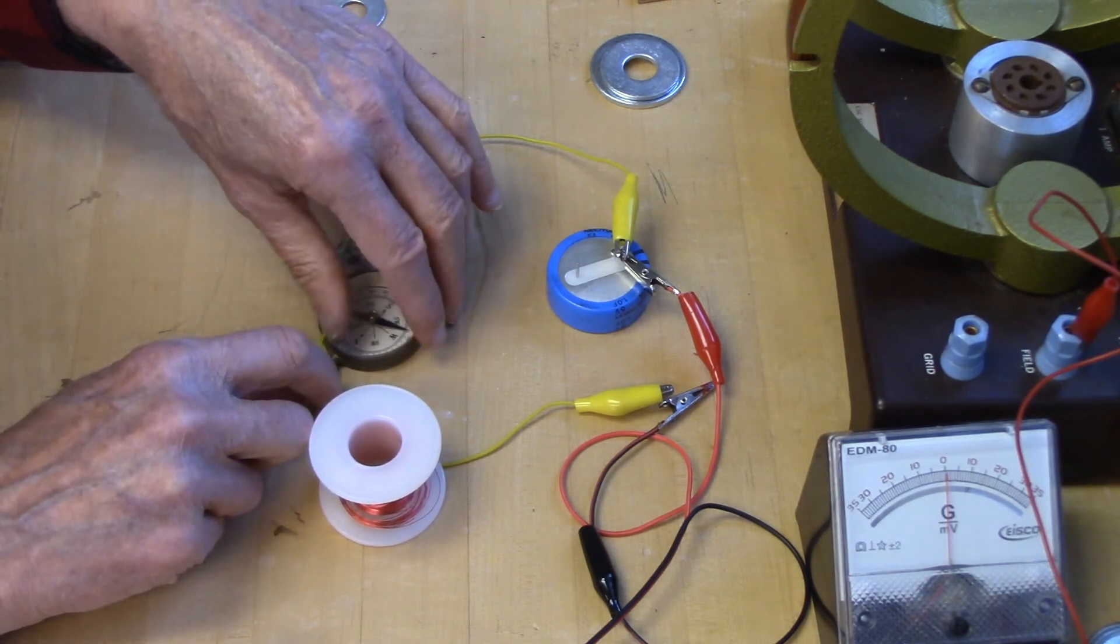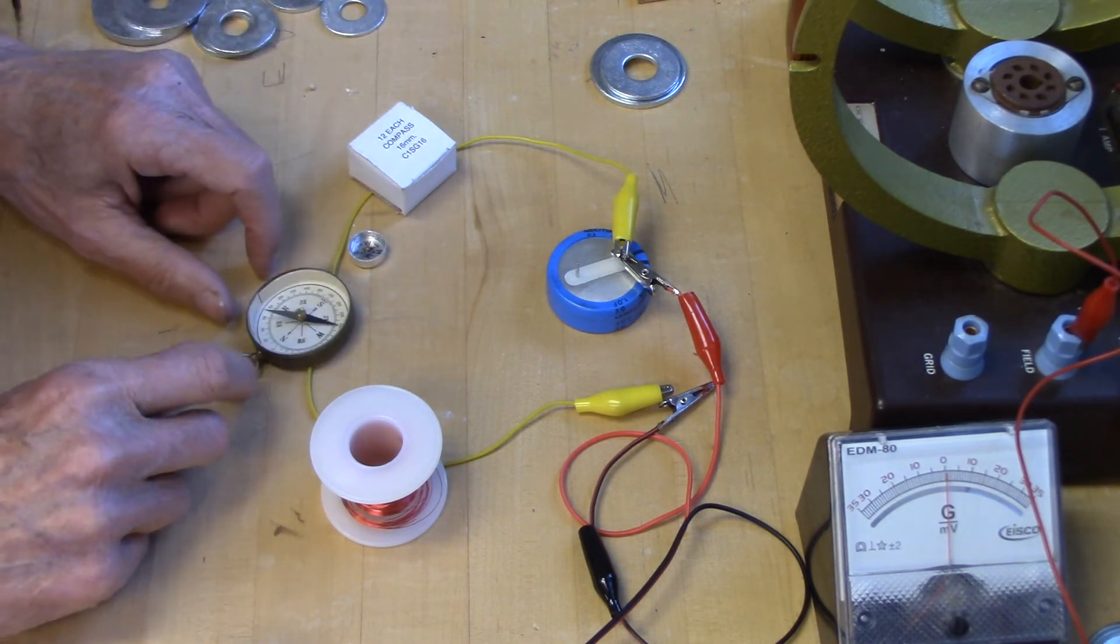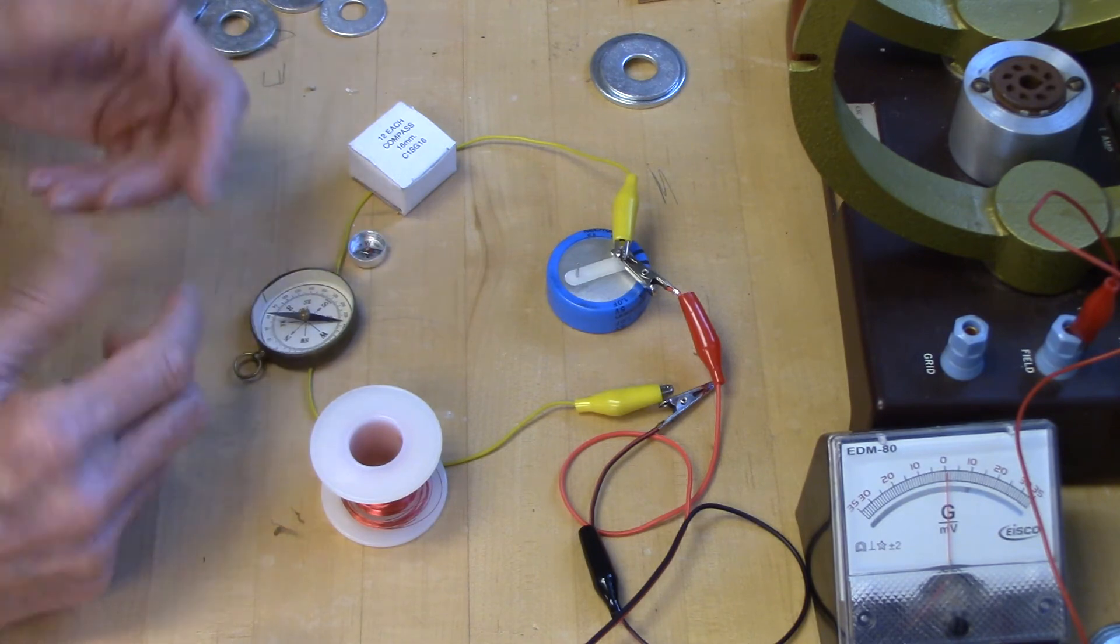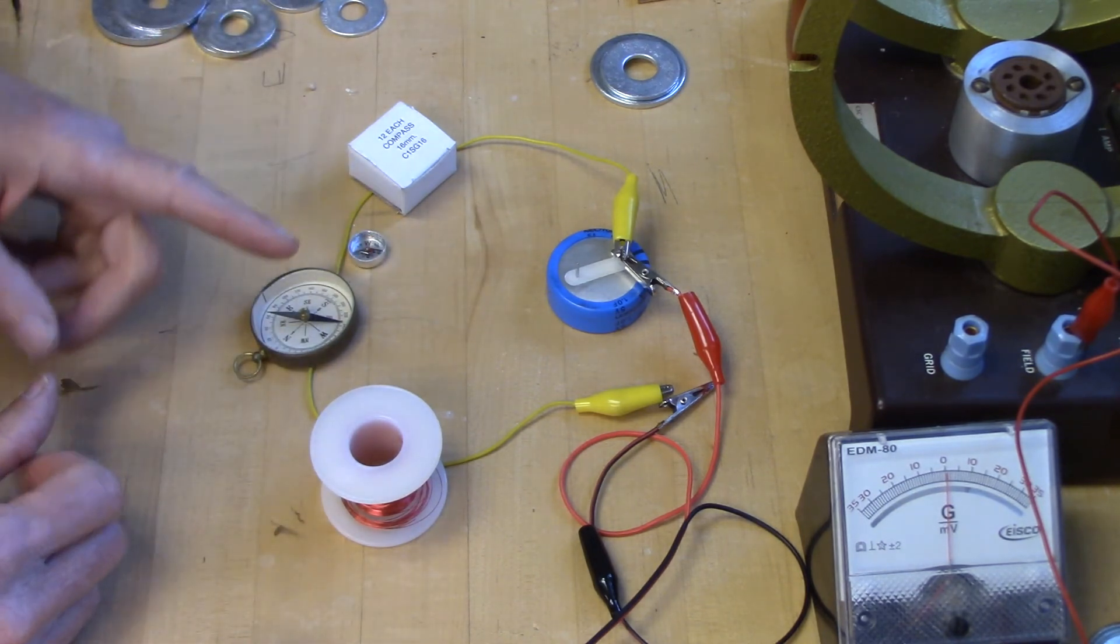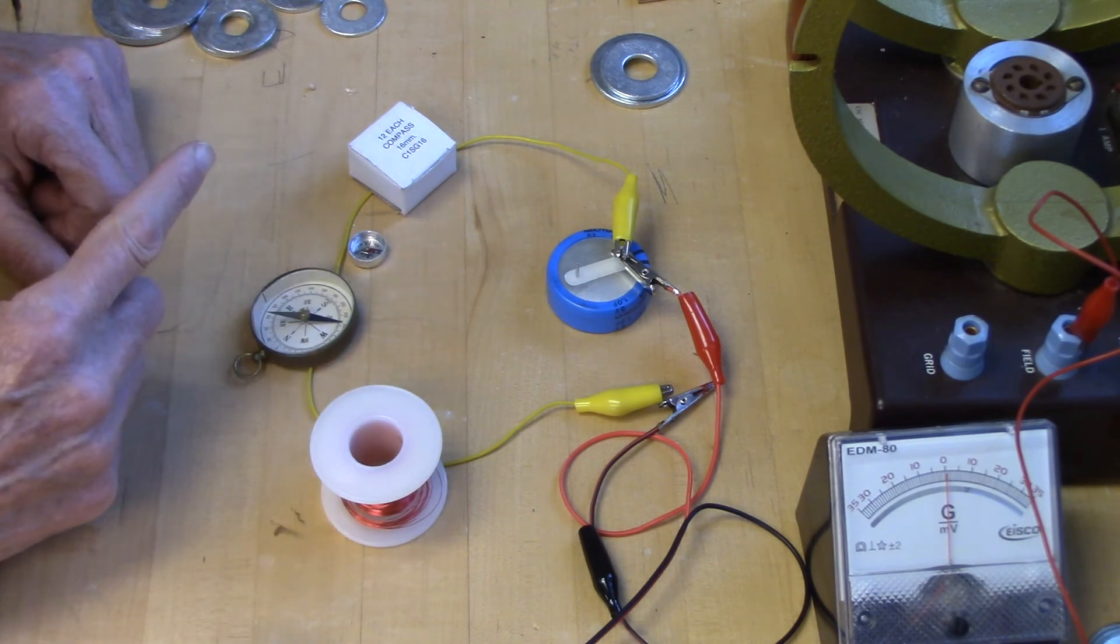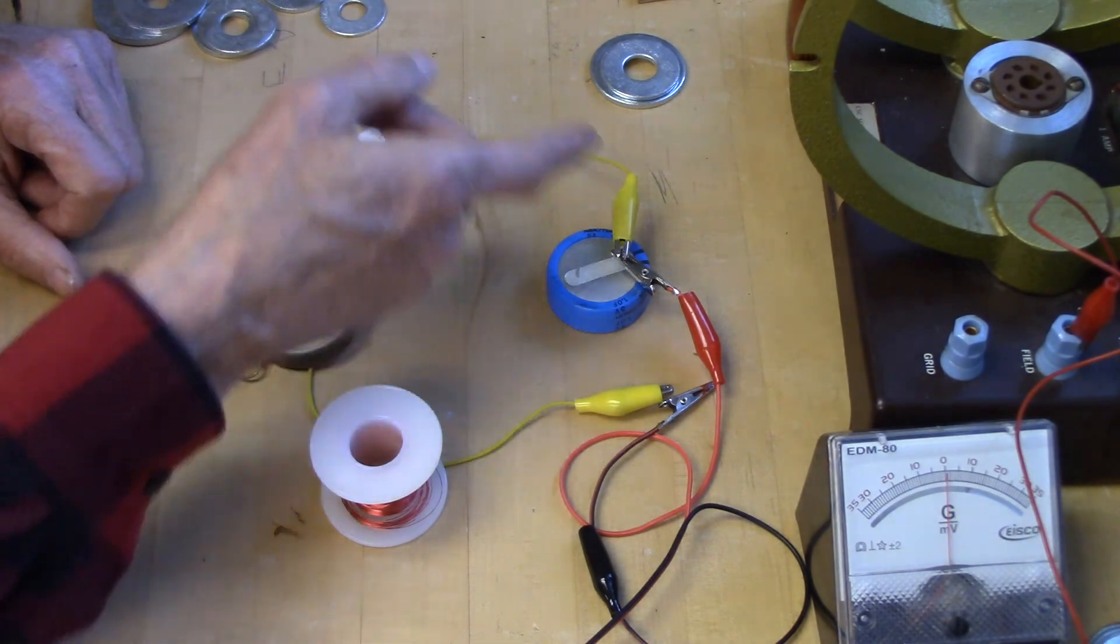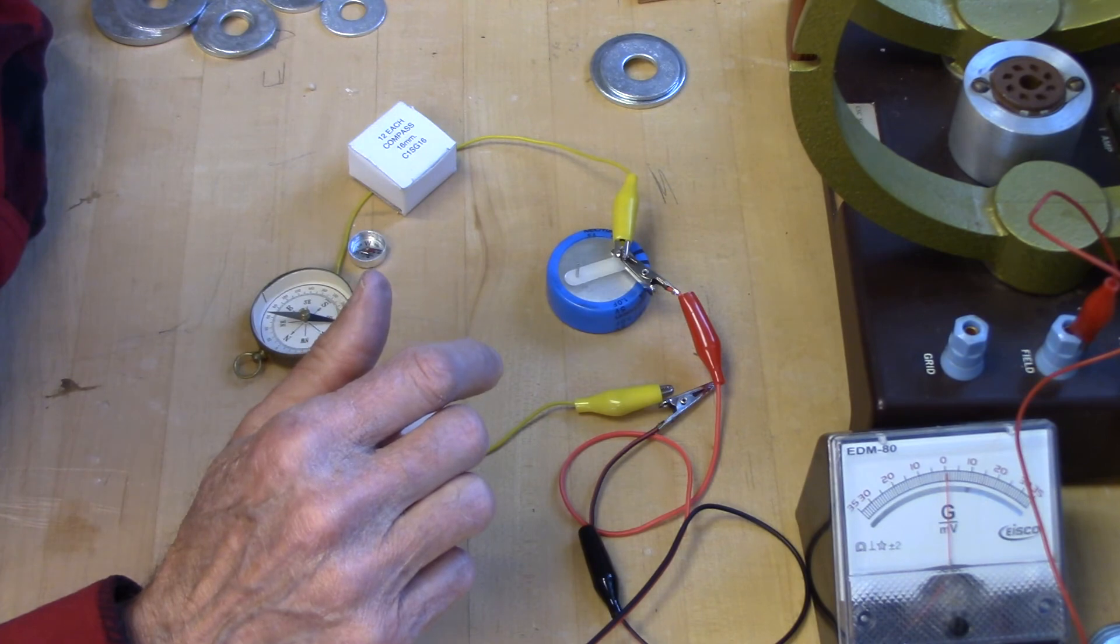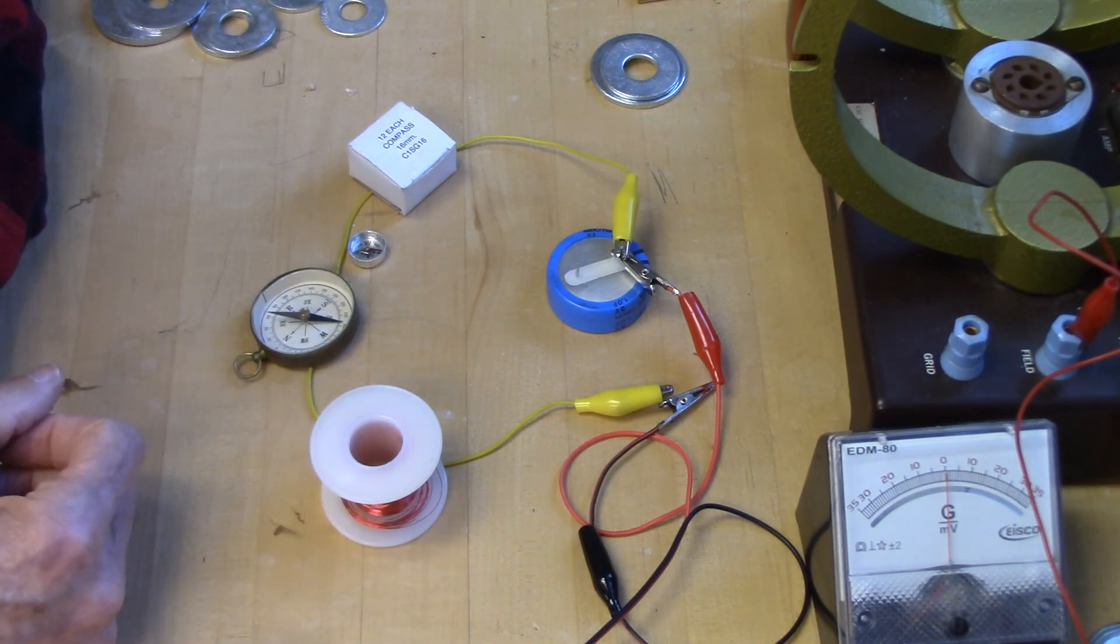If we were to put the compass on top of the wire, which is a little tricky to do because it tends to tip the compass, we would see it deflect in the opposite direction. Now you put that together, and you get the beginnings of understanding the rule that relates the current to the magnetic field it produces.